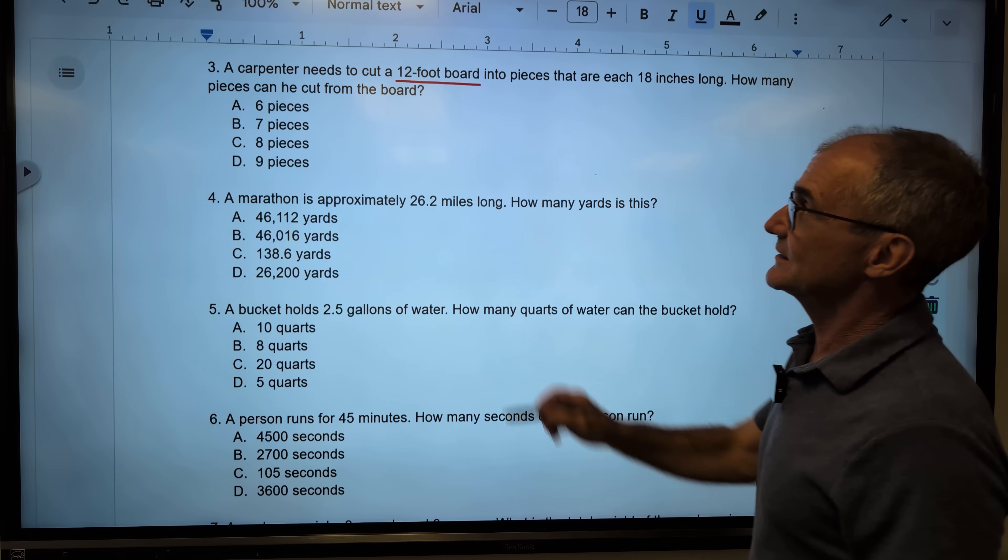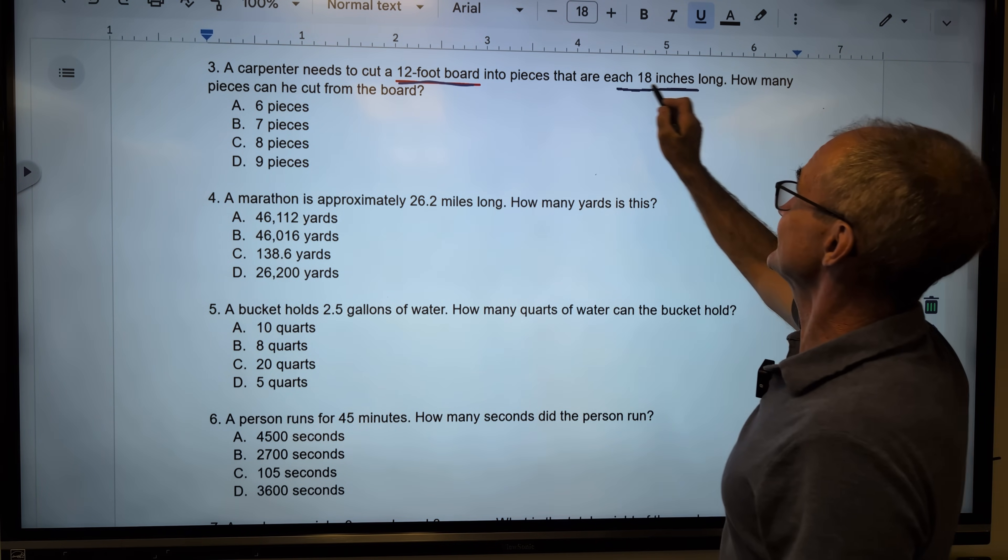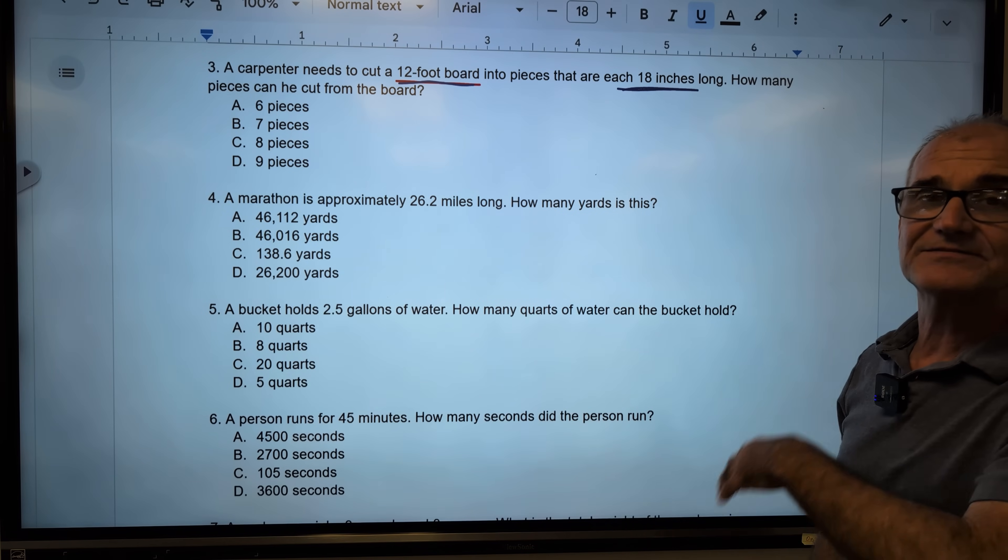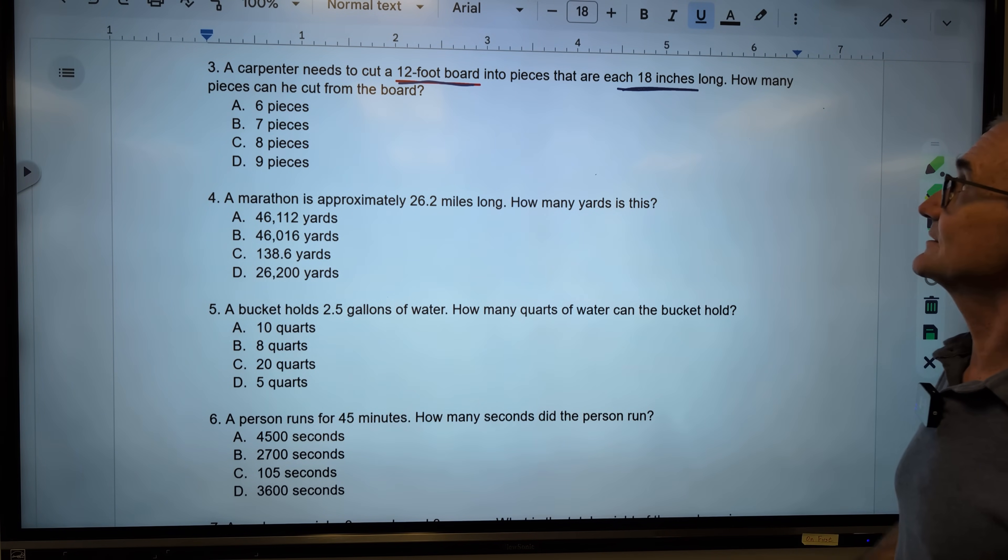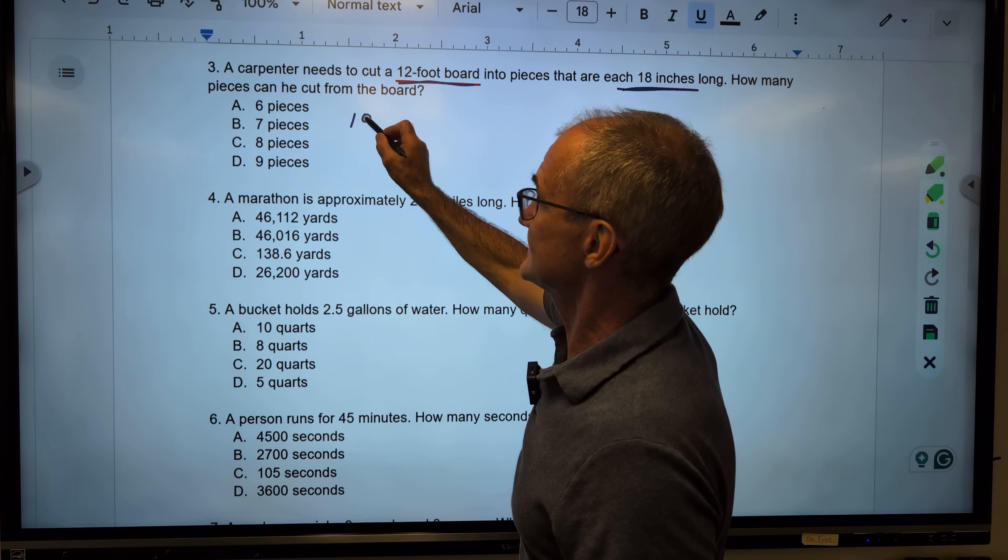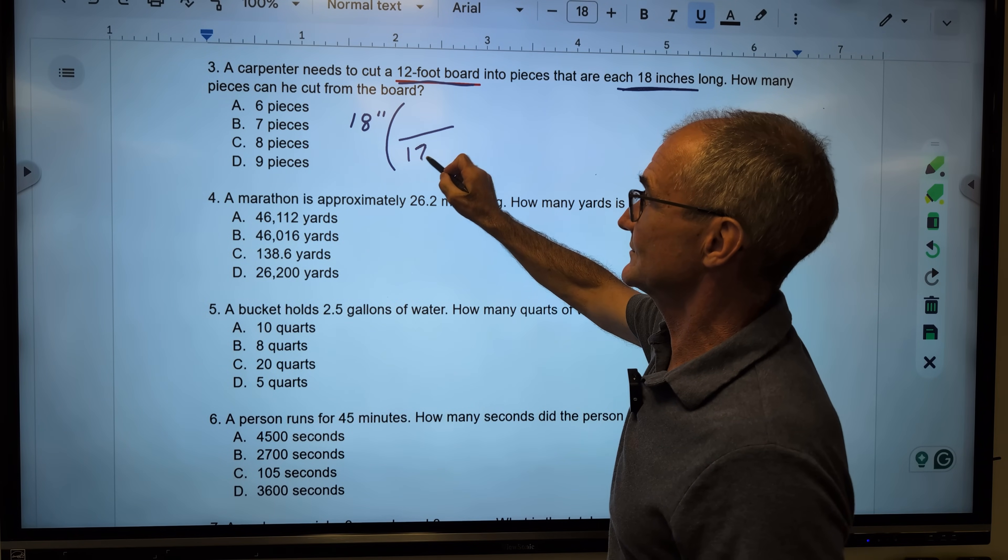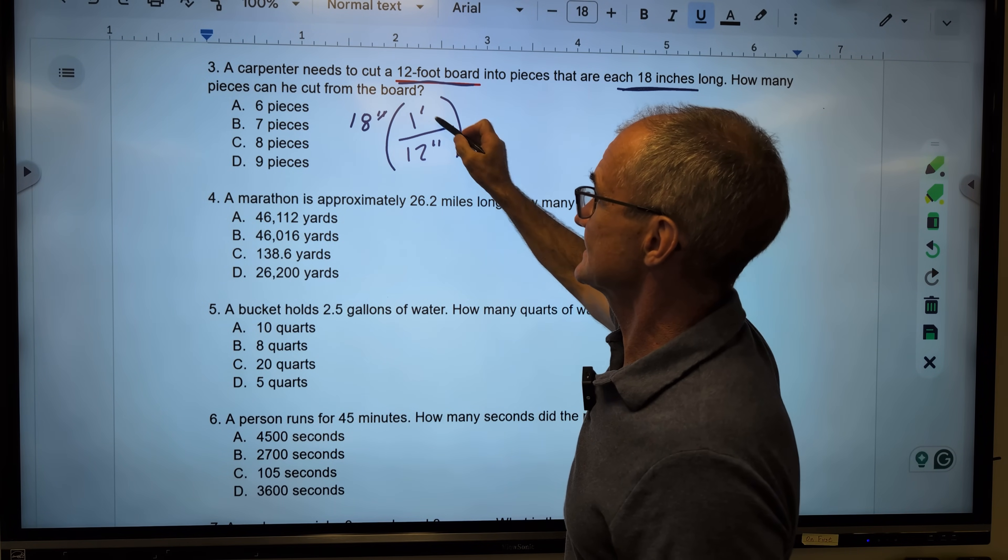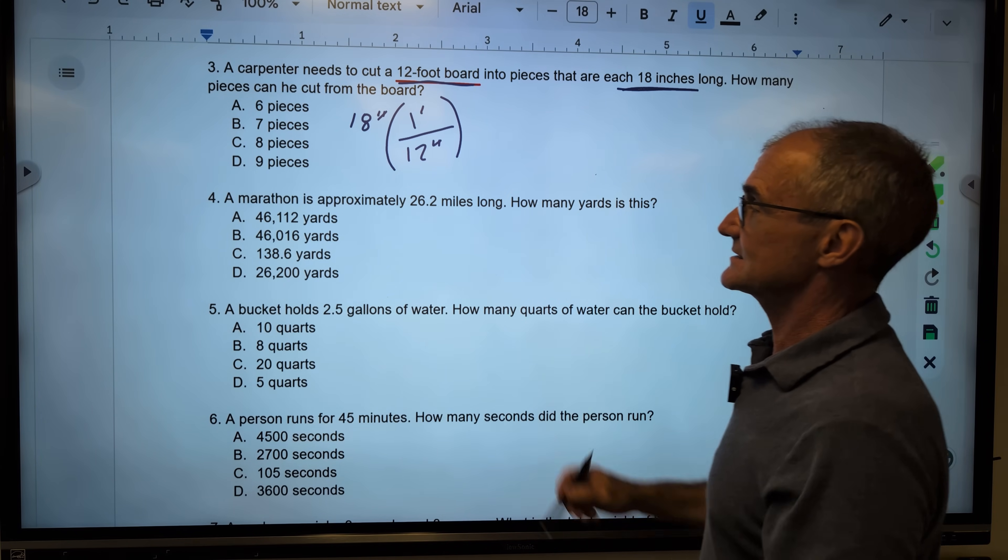Okay, problem number 3. A carpenter needs to cut a 12-foot board into pieces that are 18 inches long. So I need to do 12 feet divided by 18 inches. They are different units, so I've got to get the same units. 18 inches, I'm going to multiply by 1. 12 inches equal 1 foot. My inches cancel. I could reduce that fraction.